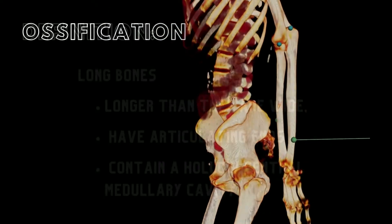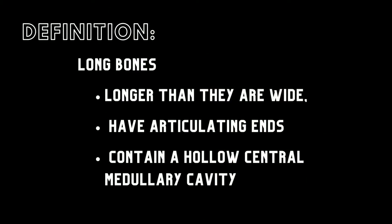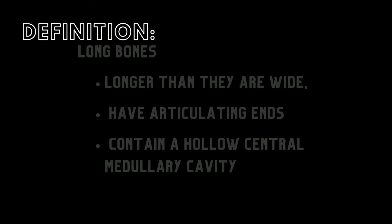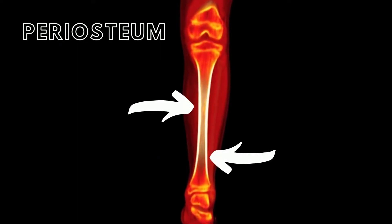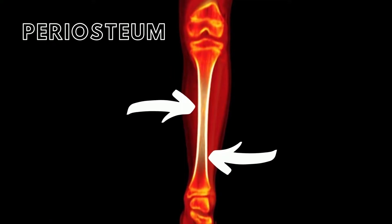Long bones are longer than they are wide, have articulating ends, and contain a hollow central medullary cavity. The shaft of the bone is surrounded by two layers of connective tissue that are together called the periosteum.